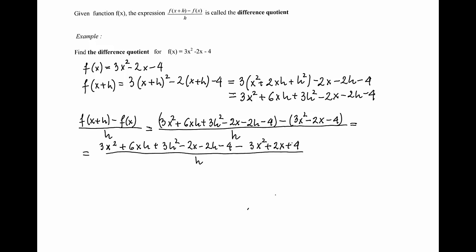Notice that certain things will cancel out. 3x squared and negative 3x squared will cancel out, 2x and negative 2x, and so is 4 and negative 4. As a result, I will be left with 6xh plus 3h squared minus 2h, and all of this is divided by h.